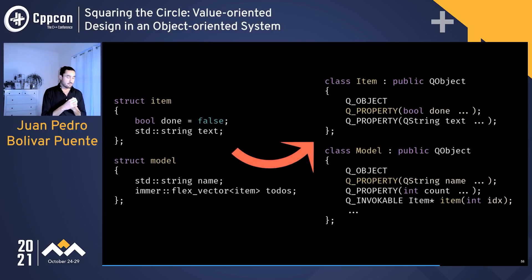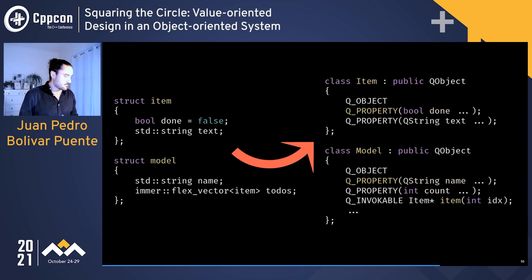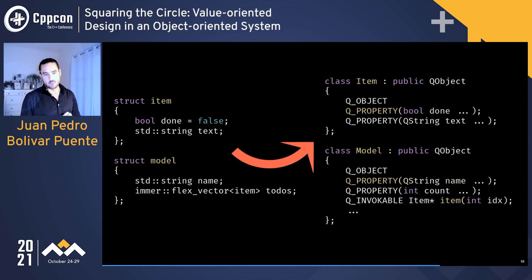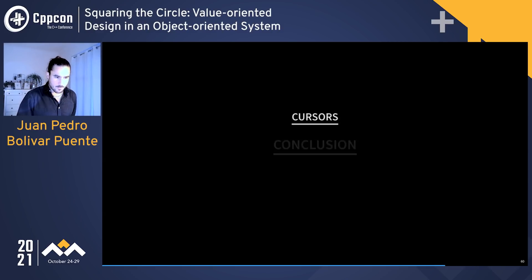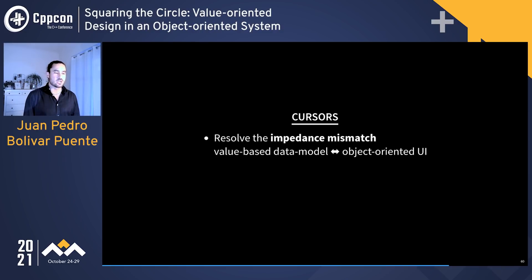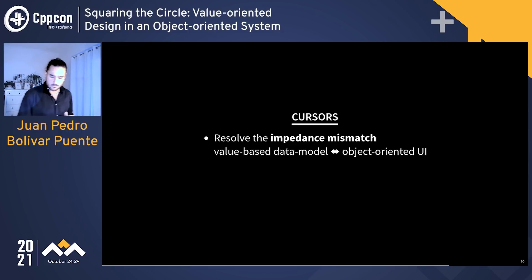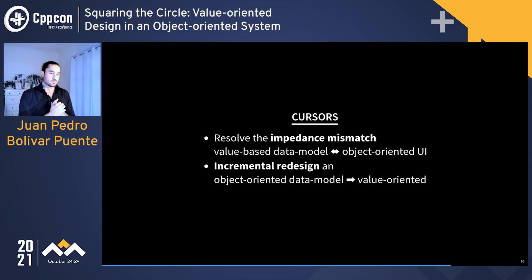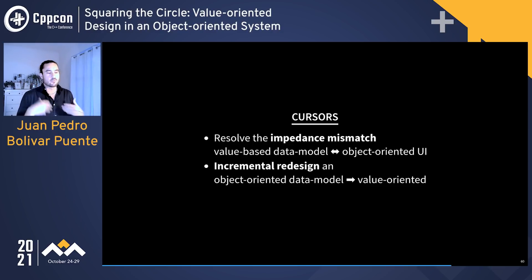If you think about it, we've achieved something I thought was impossible years ago: writing our application data model in the simplest way using only value types, but then writing a user interface using Qt — almost automatically generating QObjects for it. In conclusion, cursors resolve the impedance mismatch between value-oriented data models and object-oriented UIs or interfaces. There is also another important use case: cursors enable an incremental redesign of an object-oriented application.